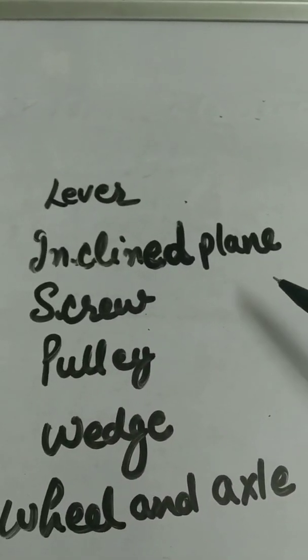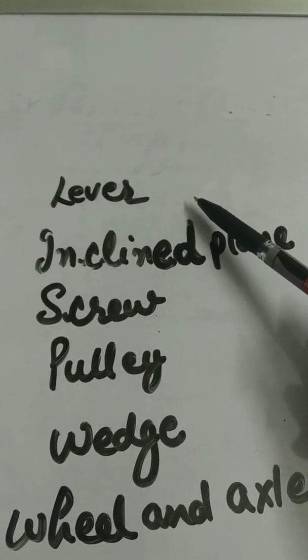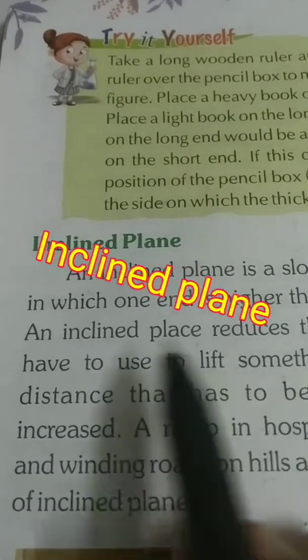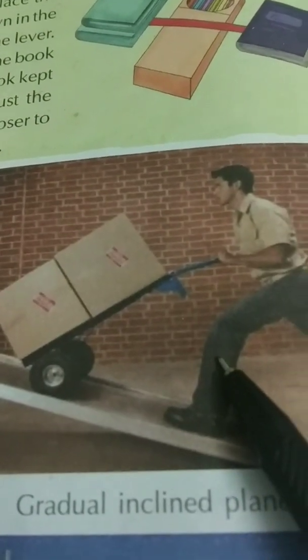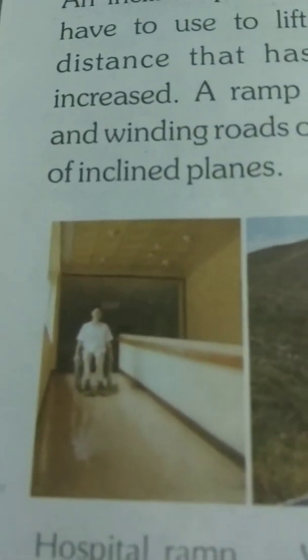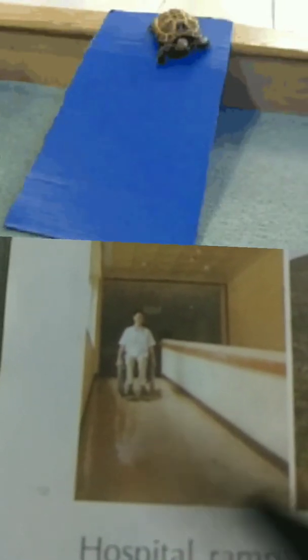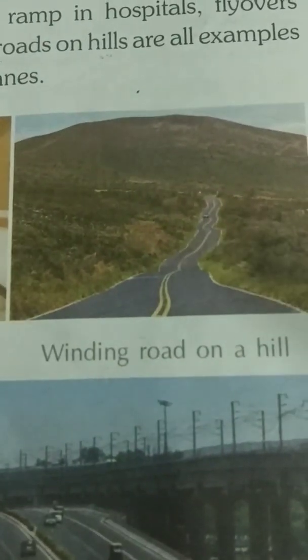We will now start with inclined plane, as the lever was already discussed in the previous video. An inclined plane is a sloping surface in which one end is higher than the other end. An inclined plane reduces the force you have to use to lift something, but the distance that has to be covered is increased. Examples include a ramp in a hospital, flyovers, and winding roads on hills.